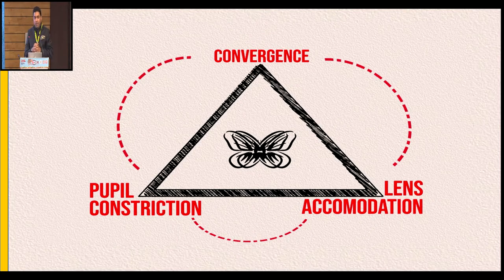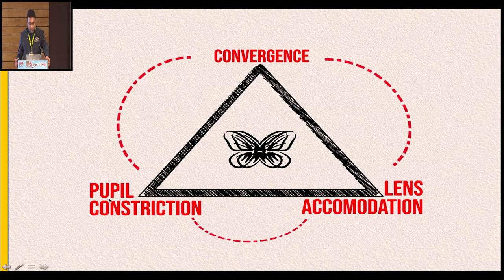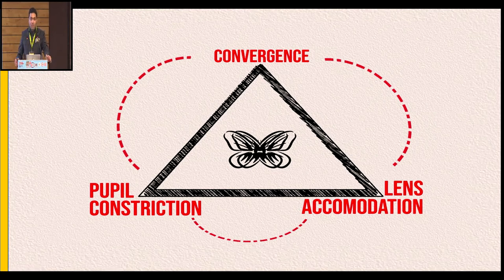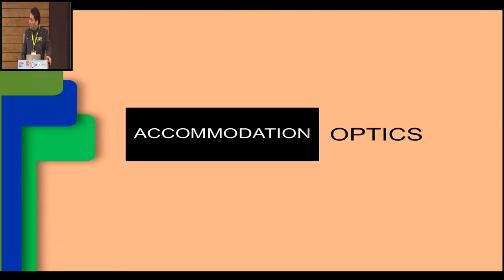One important thing about presbyopia and near work is that it's a triad: your lens accommodates, you need convergence, and you need to be able to constrict the pupil. Many times we focus only on one aspect — the lens. We always use the word 'accommodation,' but we need all three components. We need them to work equally well to get a perfect presbyopic correction and a good outcome after any refractive procedure.